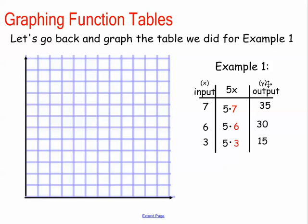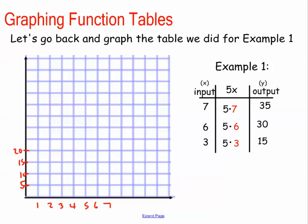If we were to look at our earlier example — again, this is not in your notes — but if I wanted to graph this function table, remember these are my x values and these are my y's. I would need to figure out what I need to count by. My x values go from 3 to 7, so I have enough to count by 1's. And my y values start at 15 and go up to 35, which are all multiples of 5, so I'm just going to count by 5's: 5, 10, 15, 20, 25, 30, 35.